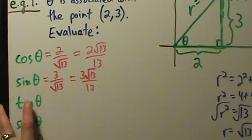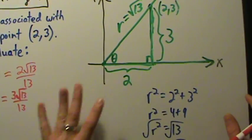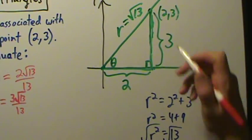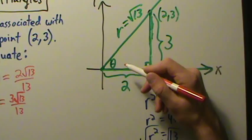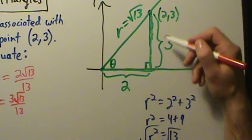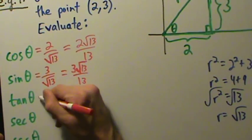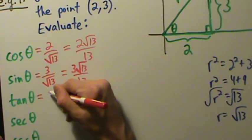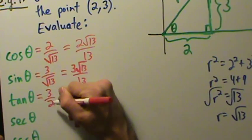Tangent of theta in terms of right triangles is opposite over adjacent, so tangent of theta in this case is 3 over 2. That's really all we're doing here — just right triangle trig.